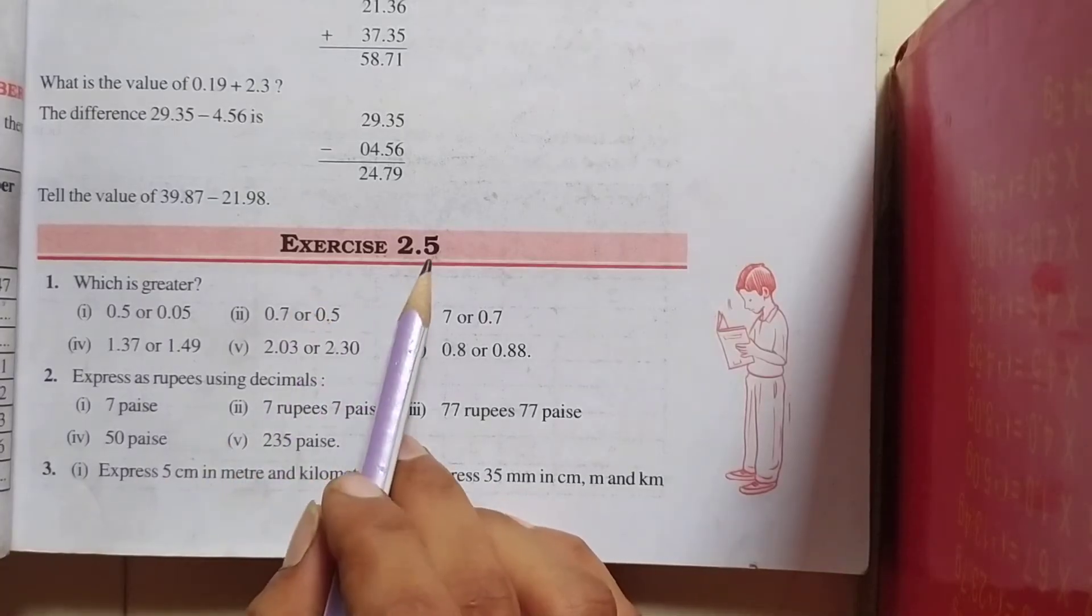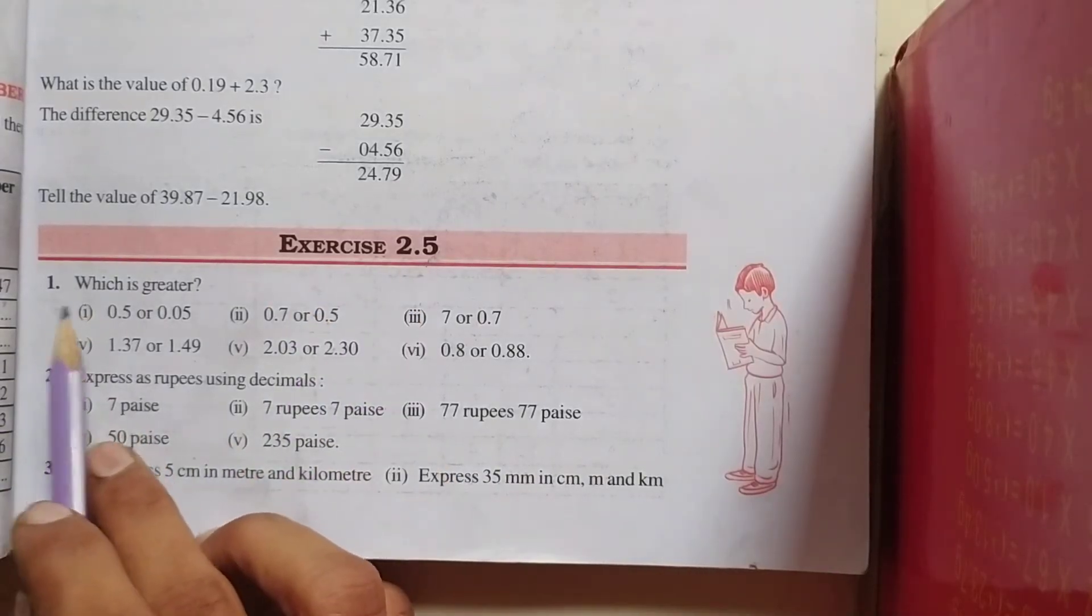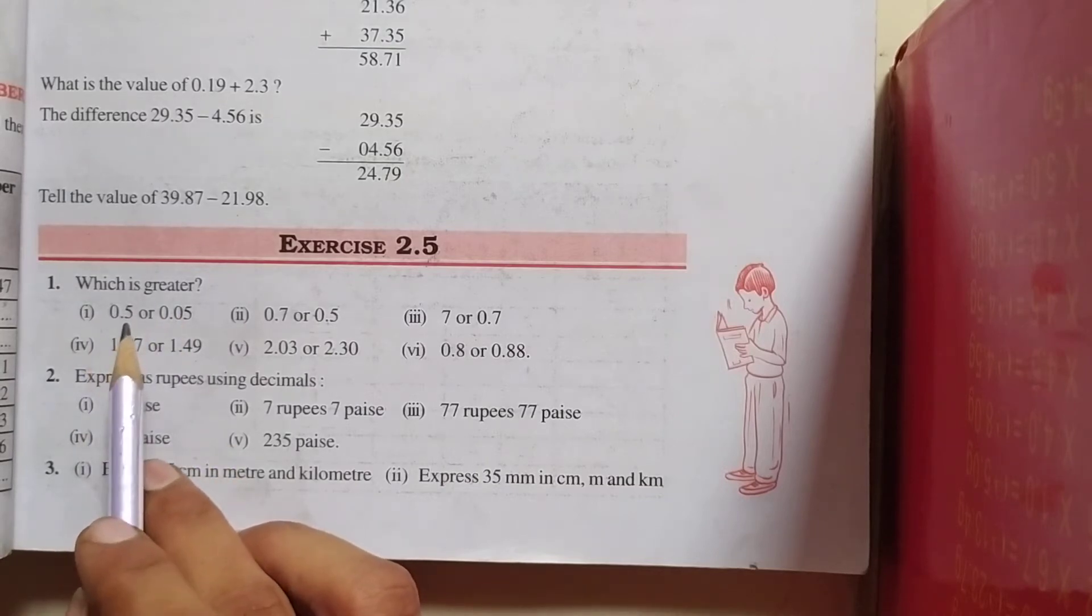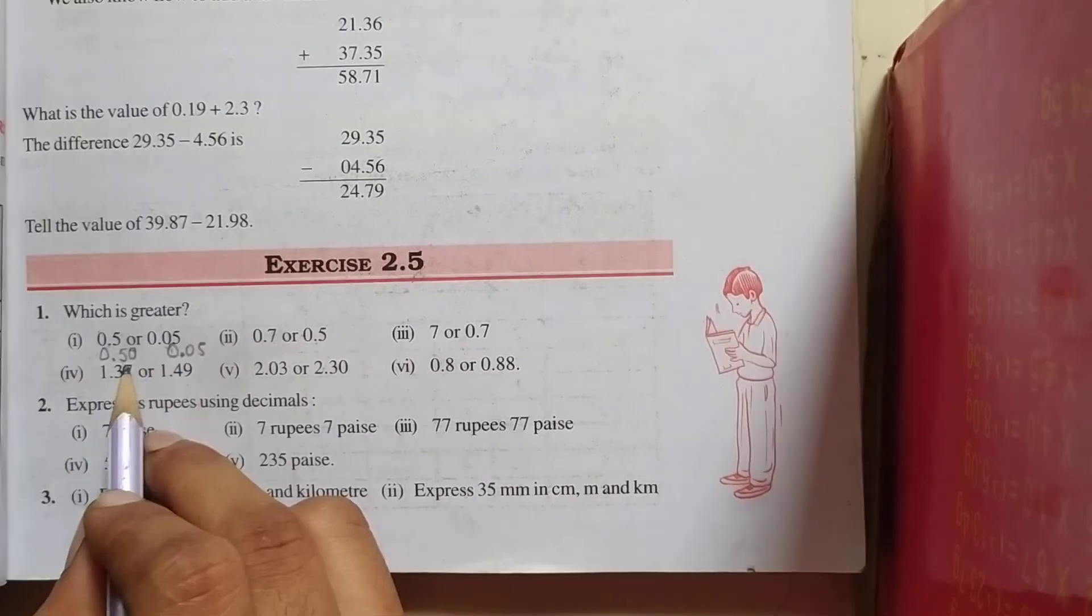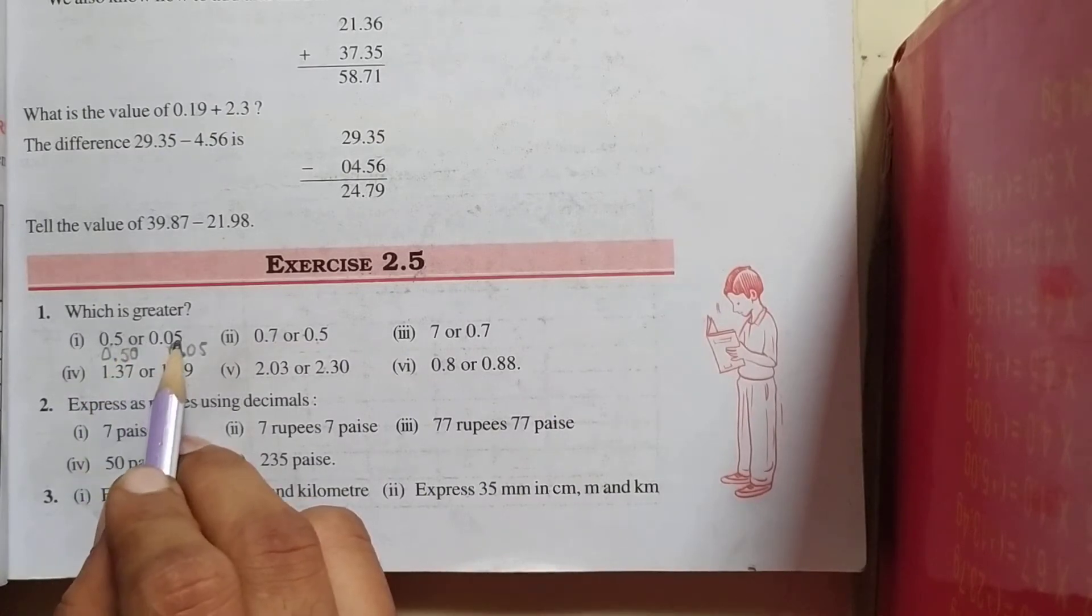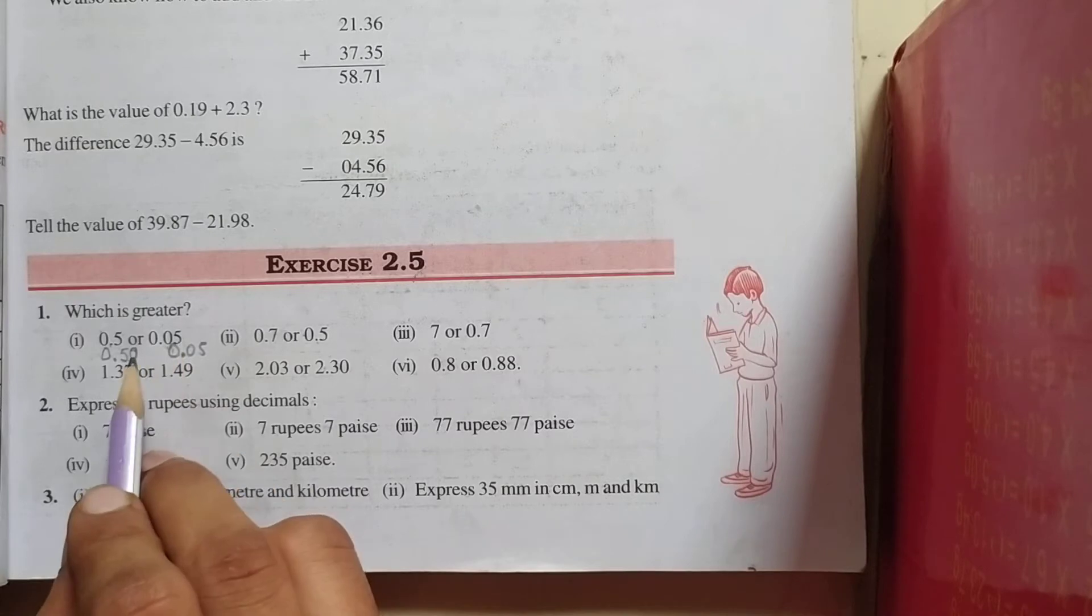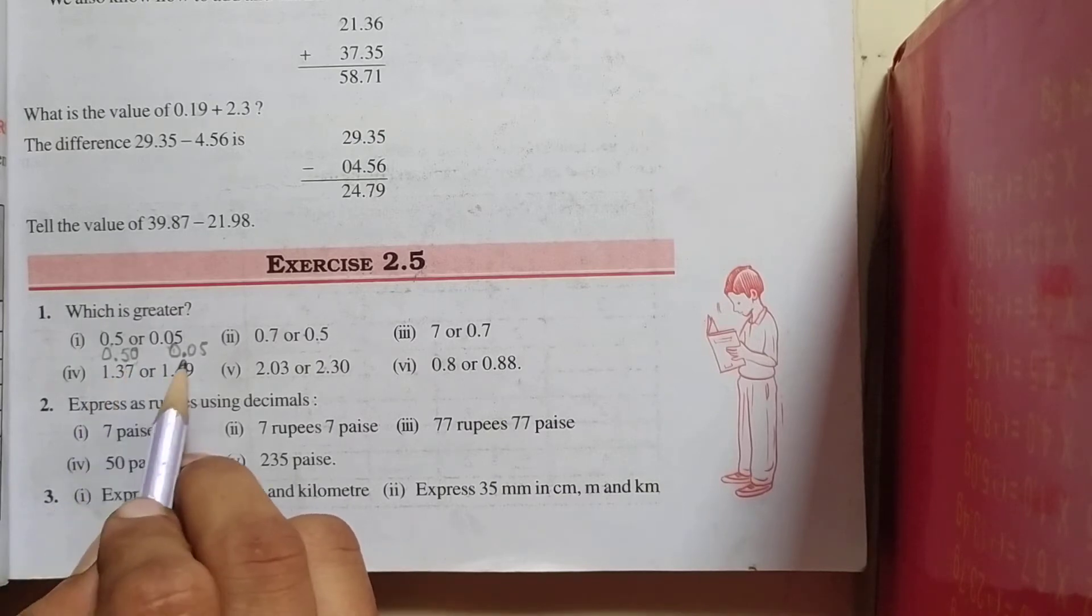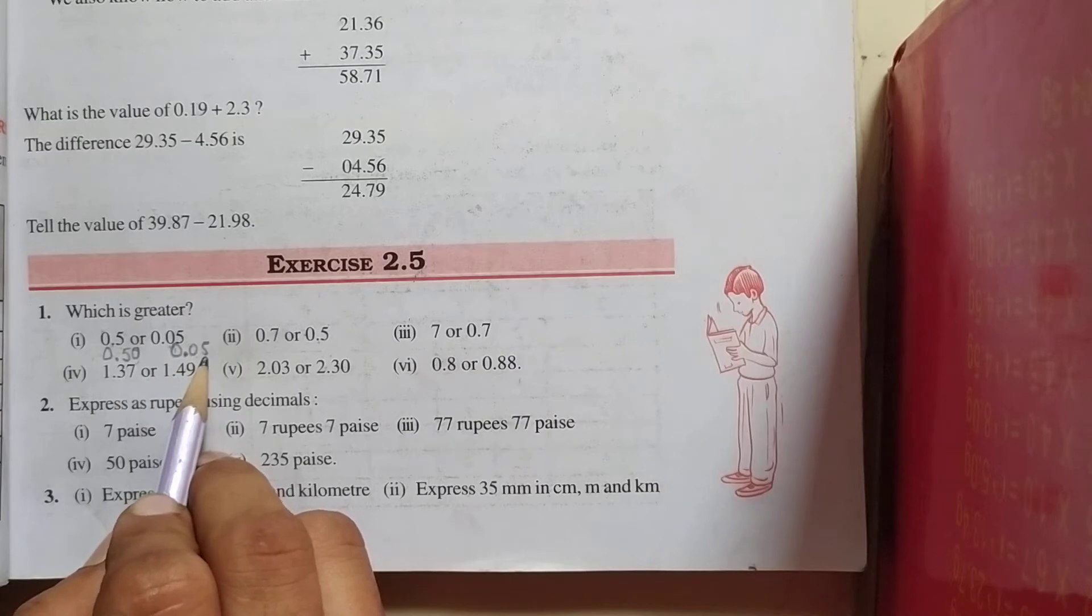Now, exercise 2.5. First question, which is greater? First, 0.5 or 0.05? First of all, look at here. Here is one decimal place and here is two decimal places. By adding 0 at the right side of 0.5, we can convert them into like decimals. So, 0.50 and here is 0.05. Now, compare.